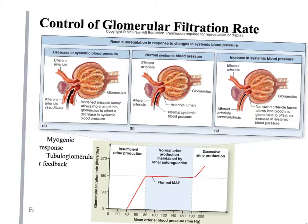To decrease blood pressure: vasodilate the afferent arteriole, more blood comes in, more filtrate produced, more urine, blood pressure goes down. To increase systemic blood pressure: constrict the afferent arteriole, less blood comes in, less filtrate produced, we retain water and blood volume, and systemic blood pressure increases. Don't confuse these two directions.